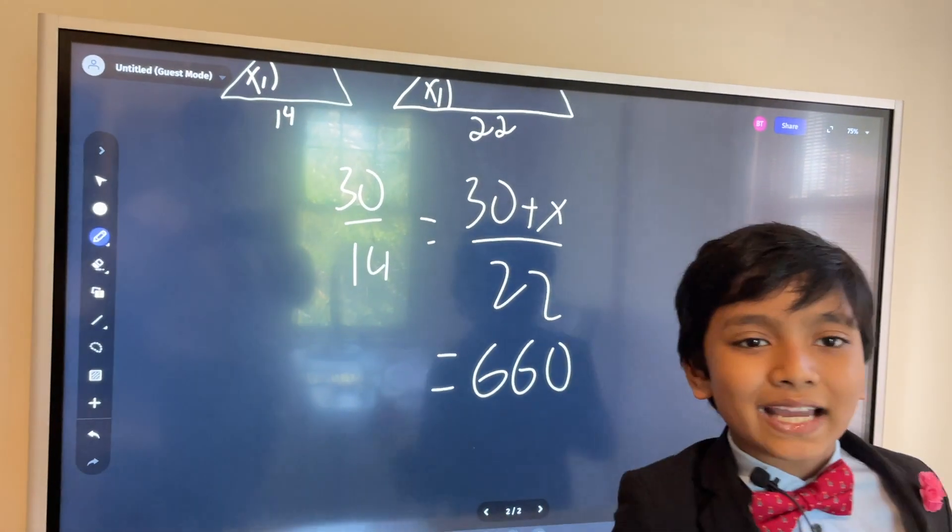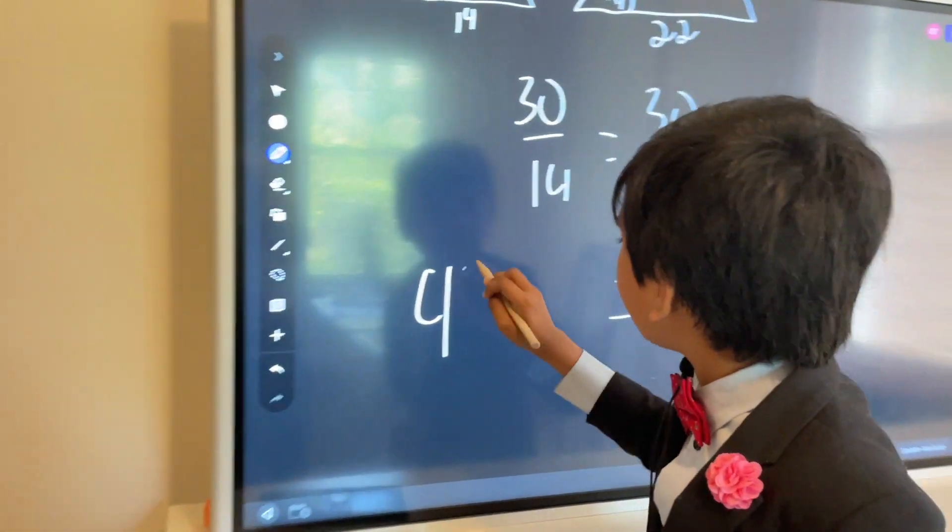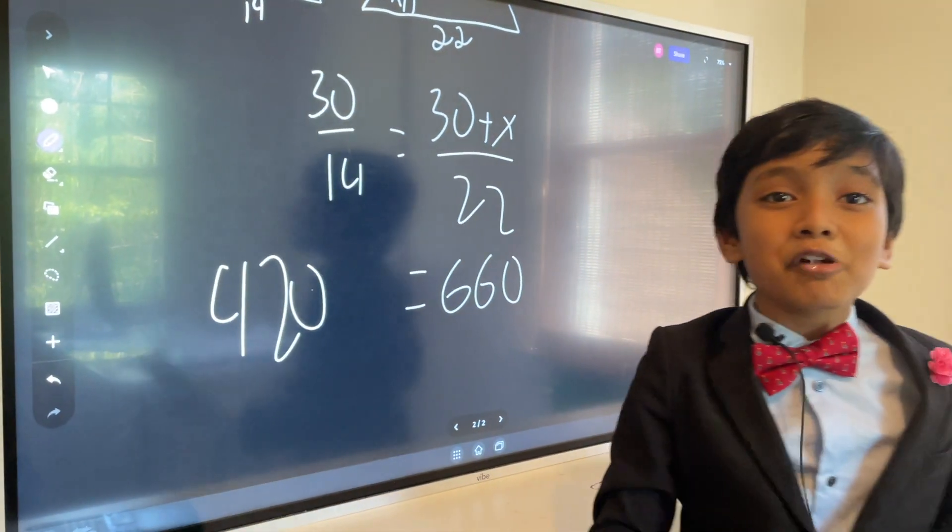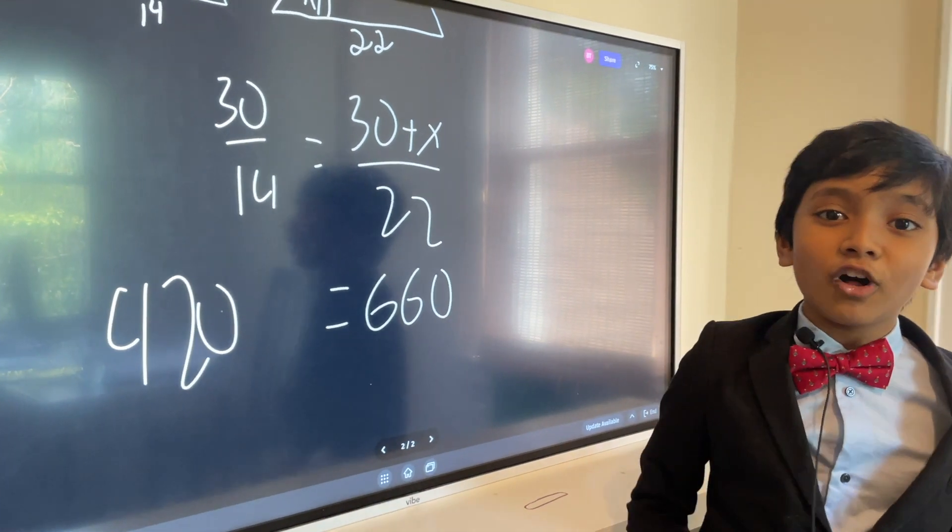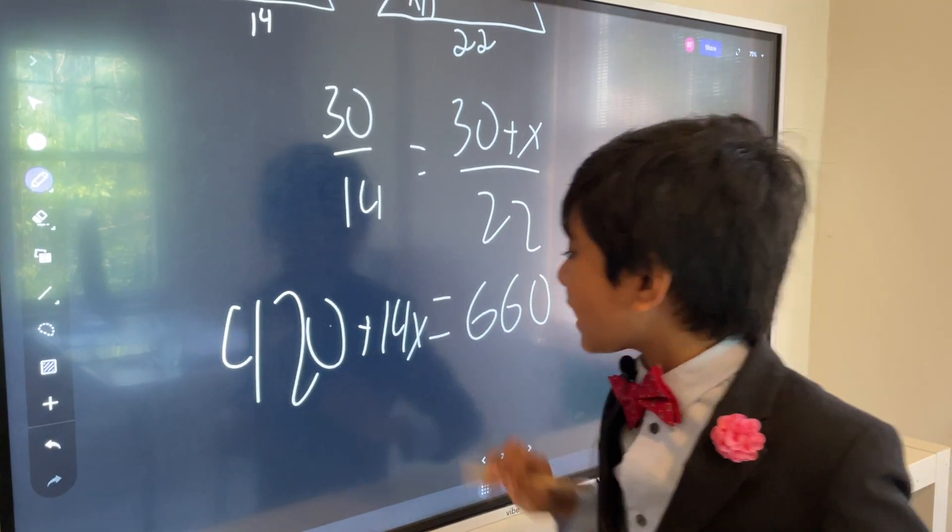And then 30 plus x times 14. That is going to be 14 times 30, which equals 420. Do not think of marijuana right now! We still have to solve our problem. And then we have 14x. Alright!